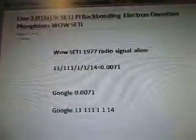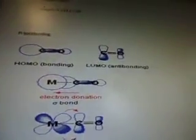So there's the alien radio signal. And there's the Pi Backbonding, Homo Bonding, Lumo Anti-Bonding, and Electron Donation Bond, Electron Donation Backbonding.